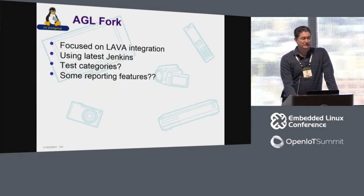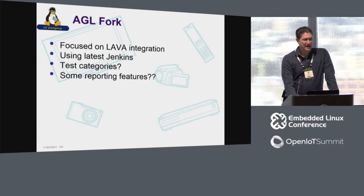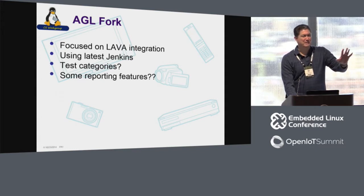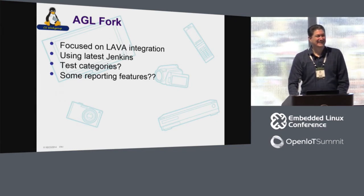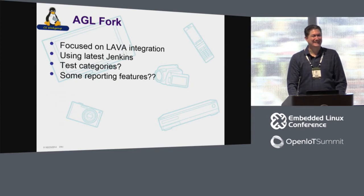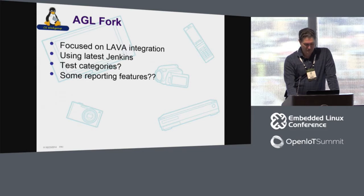The AGL fork has been really focused on Lava integration, and they're also using the latest Jenkins or a relatively recent one — not the super old one that my repository has. I thought I saw some stuff on the mailing list about test categories. Apparently there's actually a fourth fork. Well, you should have as many forks as possible — and they've also done some stuff with reporting features in the old one.